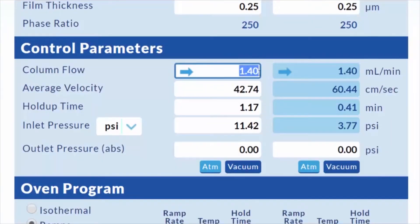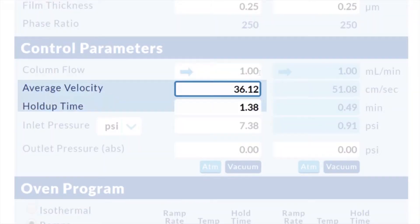Then enter your current method's column flow. Note that average velocity, hold-up time, and inlet pressure will autofill based on the column flow you specify.